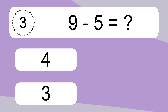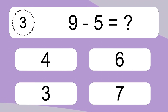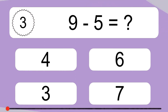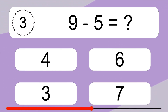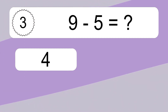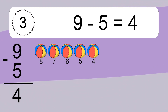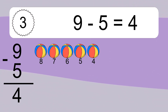9 minus 5 equals what? 9 minus 5 equals 4. Let's count it: 8, 7, 6, 5, 4.